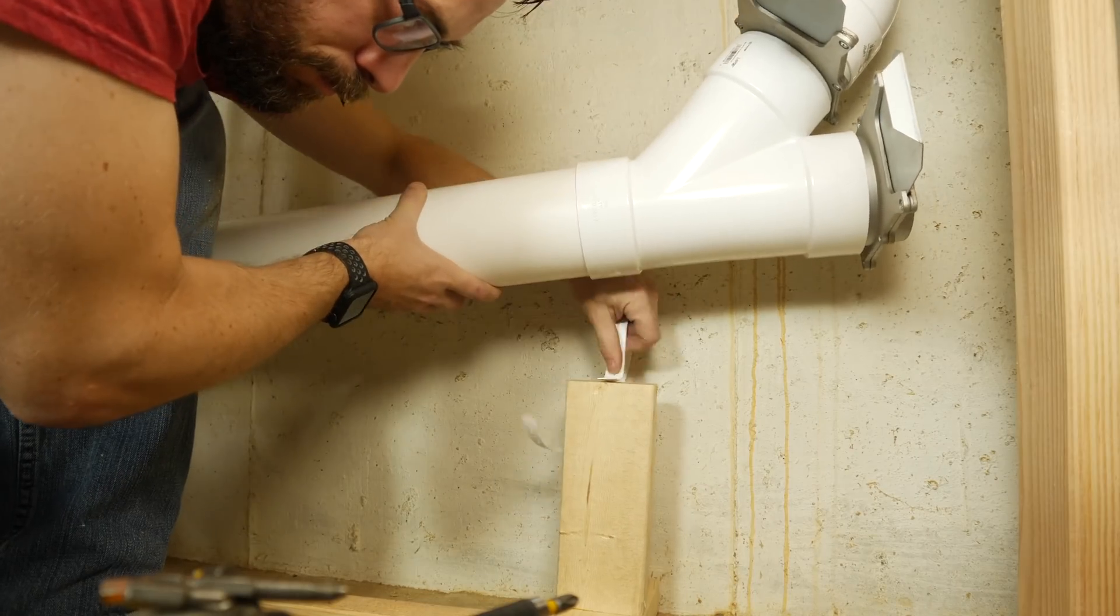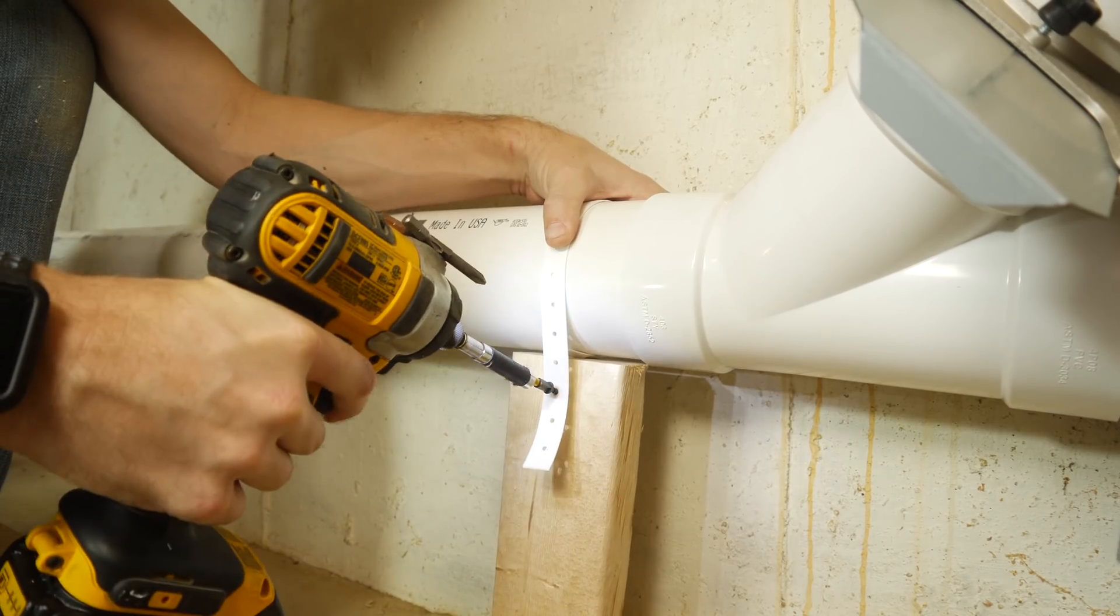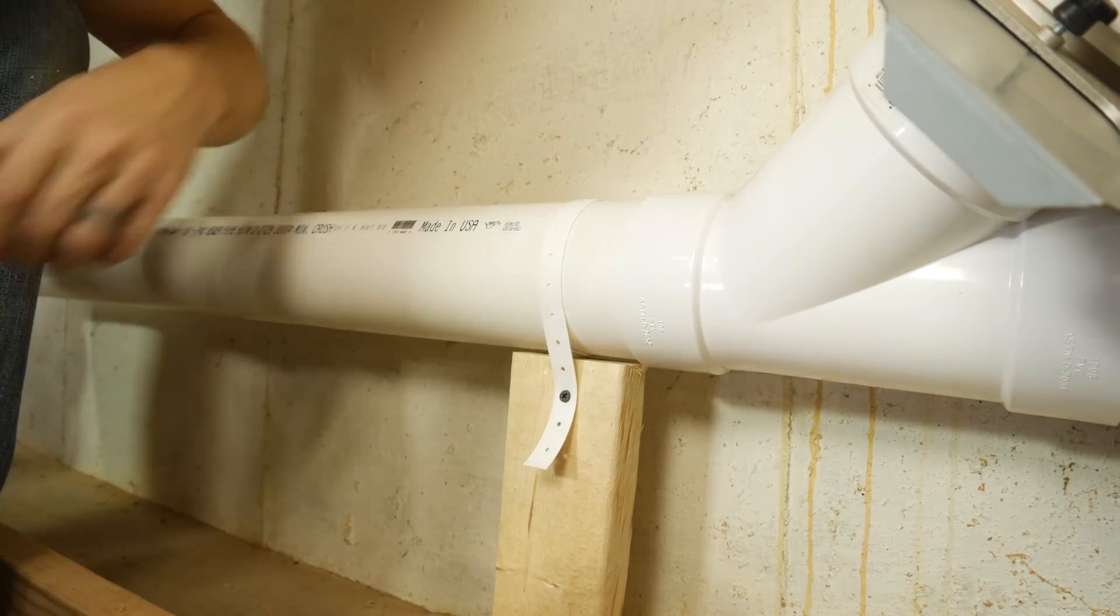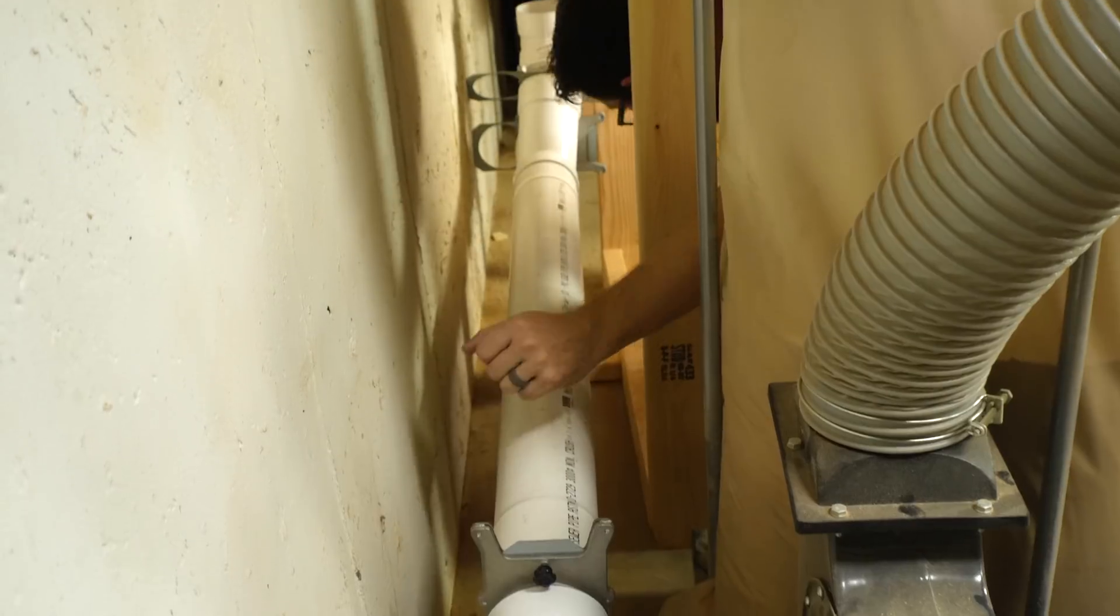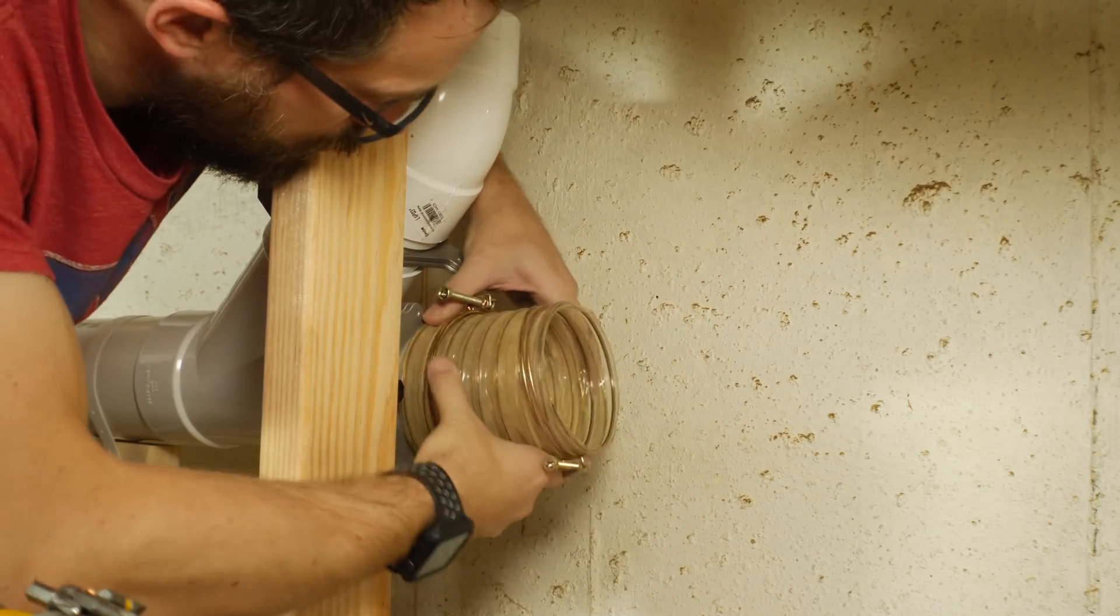This is just the main trunk that comes off of the dust collector, and since I've got a concrete wall, I couldn't very easily strap this to the wall. So I made this little stand just to hold it in place, and then where the end of it met the back of my miter saw station, I added some more strapping there to hold it in place.